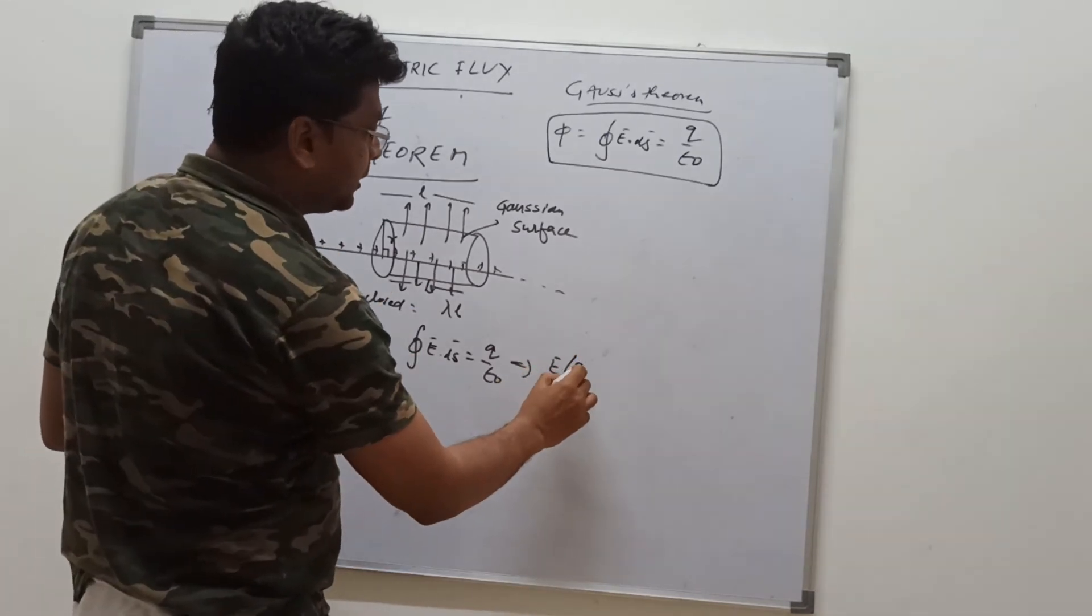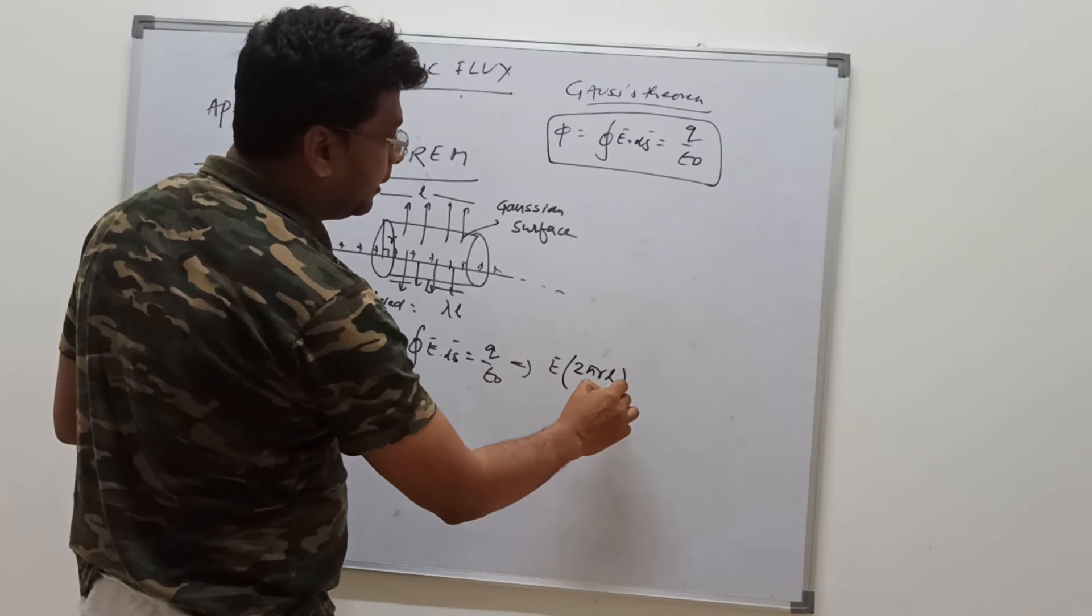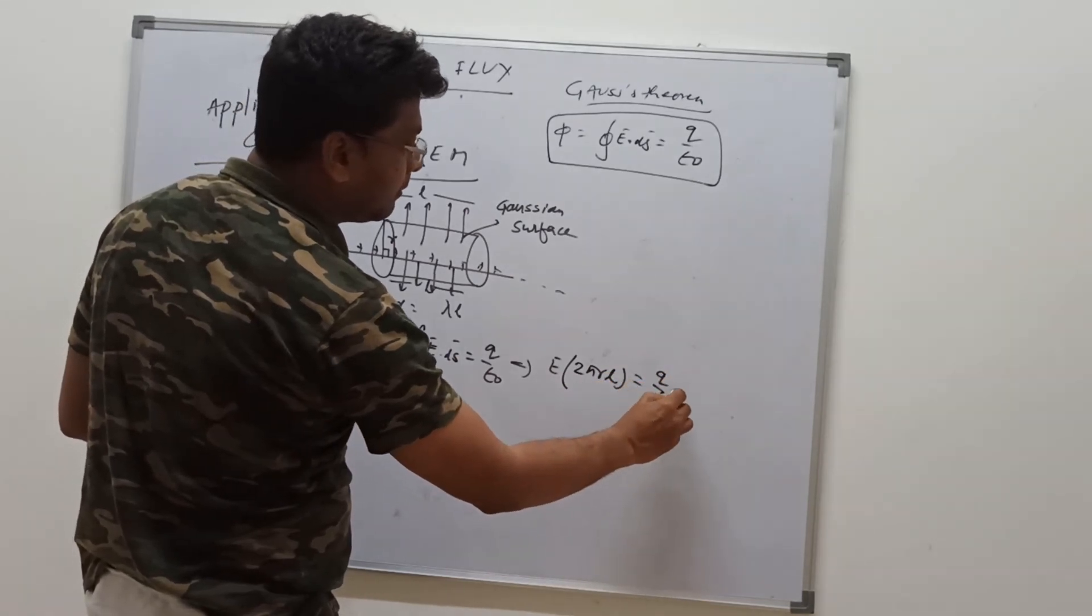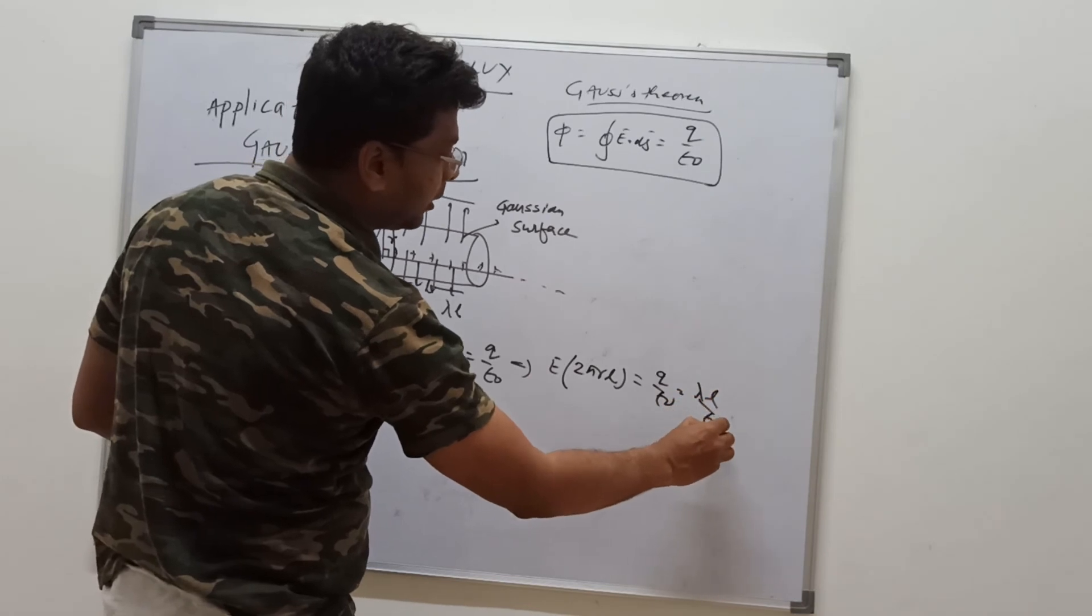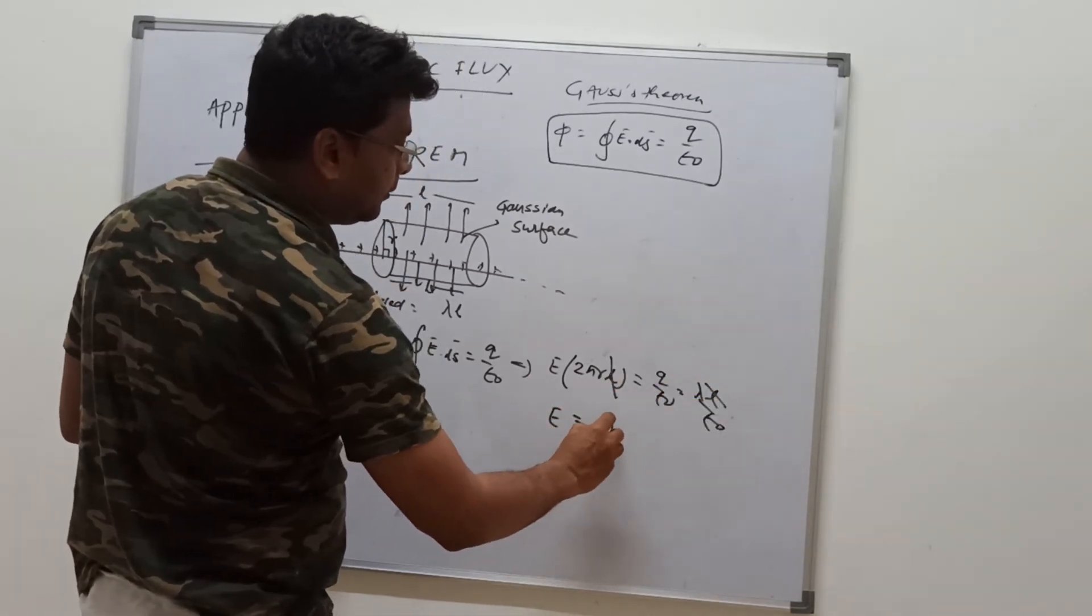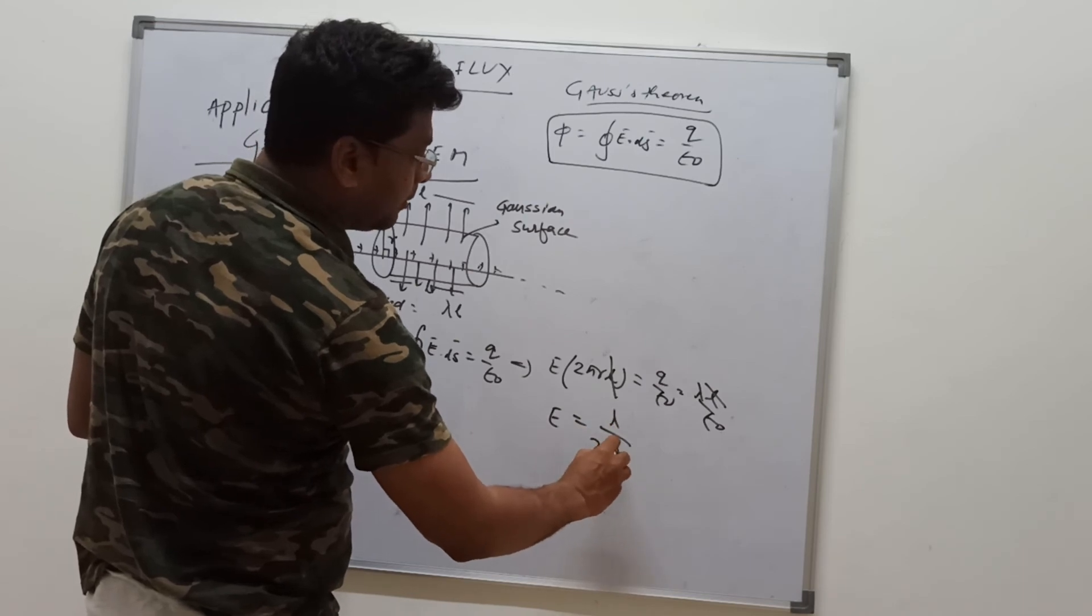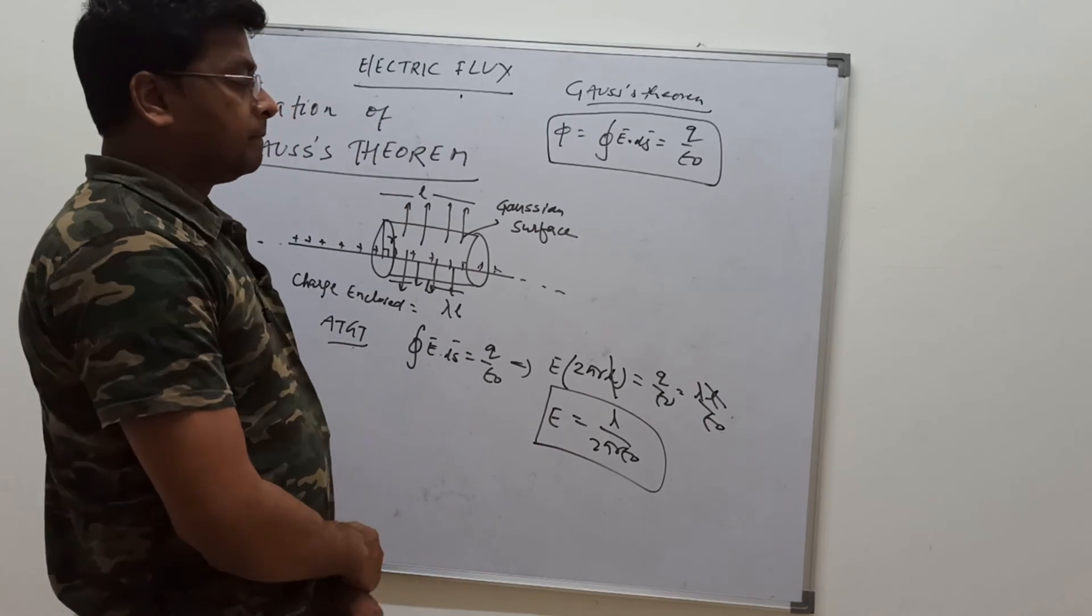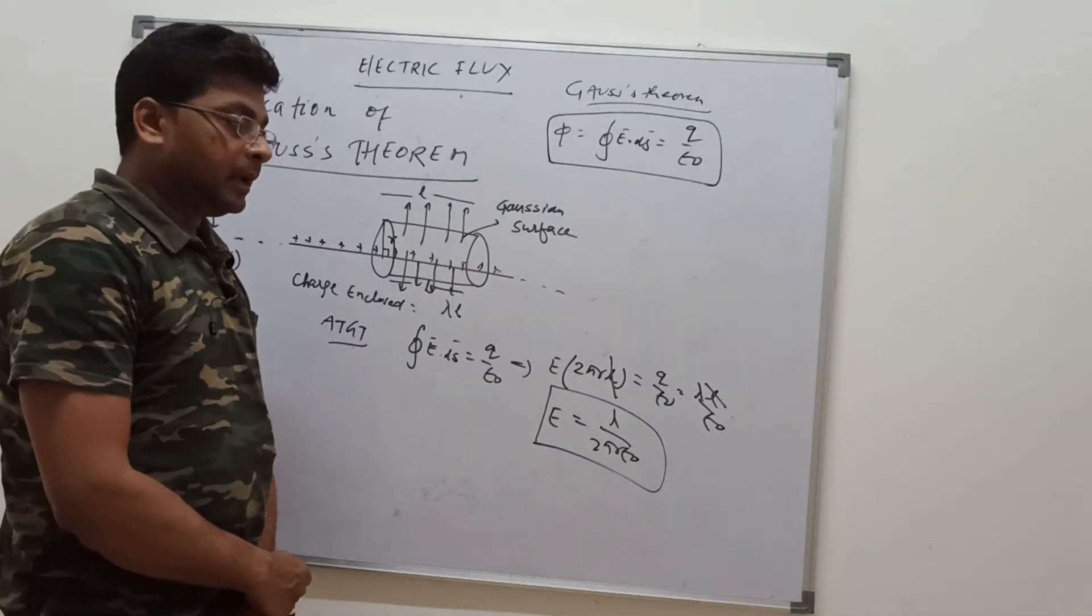So curved surface area of the cylinder is 2 pi r l. And in place of q I can write lambda into l upon epsilon naught. l will get cancelled out. E is equal to lambda upon 2 pi r epsilon naught. This is the electric field: lambda upon 2 pi r epsilon naught.